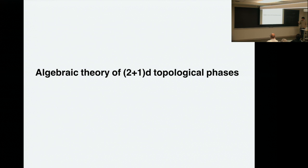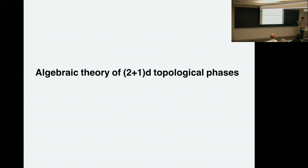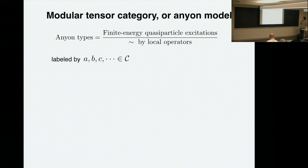So now let me go to a more formal description of the topological phase. The algebraic theory of the topological phase that I will use is a modular tensor category, nicknamed the anyon model. In this theory we describe anyons as simple objects, anyon types as simple objects in the modular tensor category. Anyons are basically superselection sectors of topological excitations up to local operators.